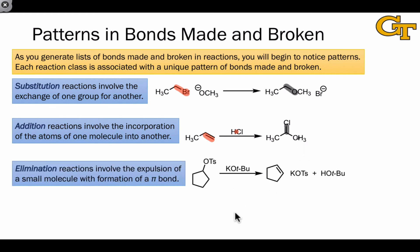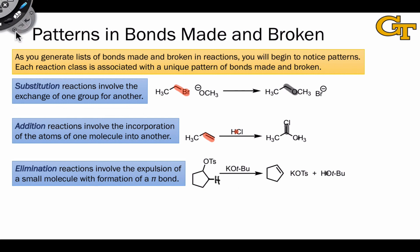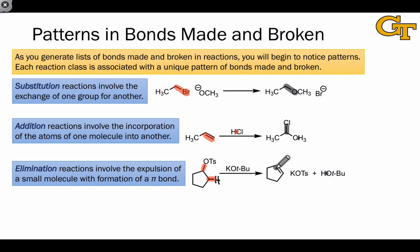Elimination reactions are just the opposite of additions and involve a kind of cycling that breaks a molecule apart. The eliminations we'll focus on are base-promoted, so there's a new H–base bond formed. In terms of bonds made and broken, we find the opposite pattern of addition: two single bonds in the starting material are generally broken to produce fragmented products, and the other new bond formed is a new pi bond. In elimination, a pi bond is made — the opposite of addition, where a pi bond was broken.